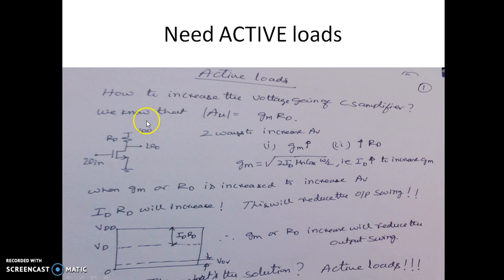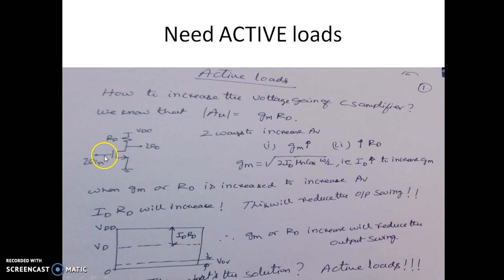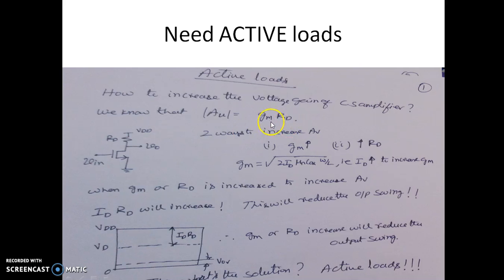We will have a look at how to increase the voltage gain of a CS amplifier. We know that this is a CS amplifier. The biasing is not shown here, so we will assume that the biasing is existing and the output is taken at the drain. The input is applied at the gate. Now, the expression for the gain magnitude is given by GM into RD — it is the product of GM and RD.